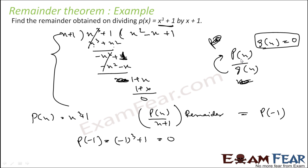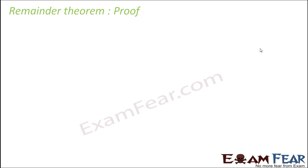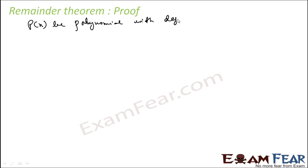When you say p(x) divided by g(x), the degree of p(x) has to be more than the degree of g(x). So let's do a proof for the remainder theorem. Let p(x) be any polynomial with degree greater than or equal to one. I'm saying if p(x) is divided by x - c...